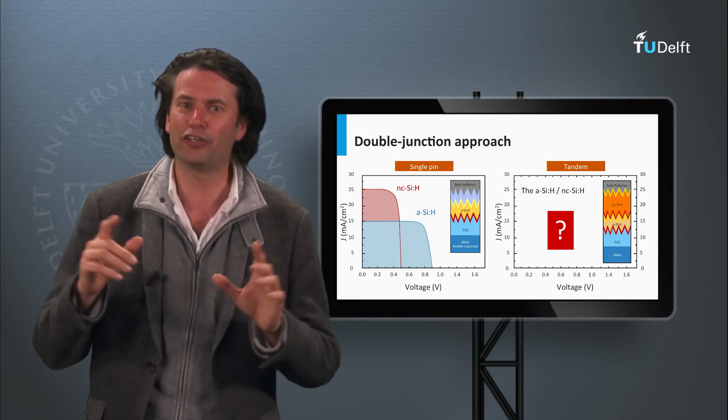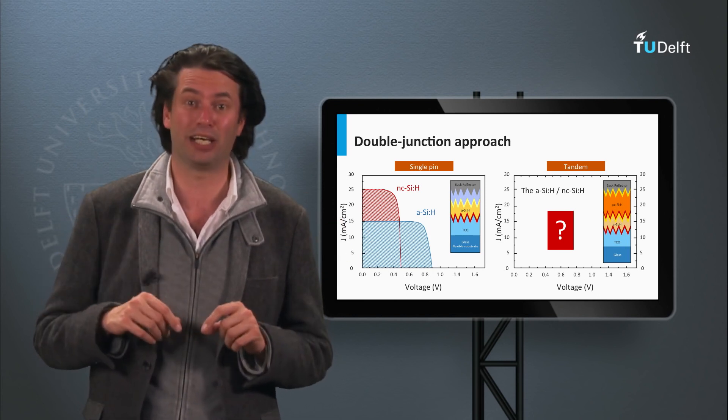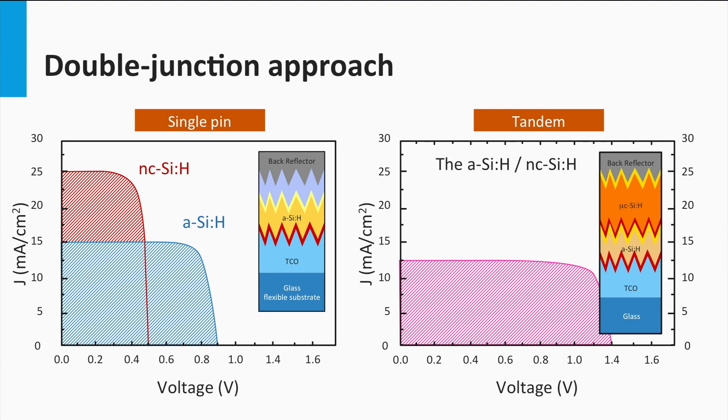How would the JV curve of the corresponding tandem cell look like? If we would make a multi-junction of both components, we would get a cell with an open-circuit voltage equal to the sum of the open-circuit voltages of the individual single cells. The resulting current density of the double junction is lower than the currents in both bottom cells. The total current utilization of the tandem cell is determined by the bottom cell, which is 25 mA per square centimeter.